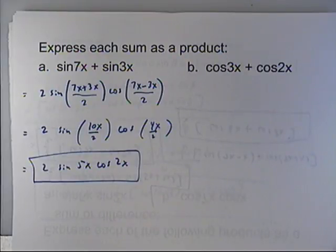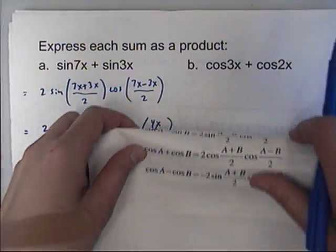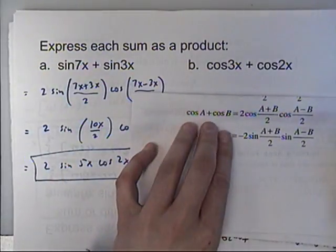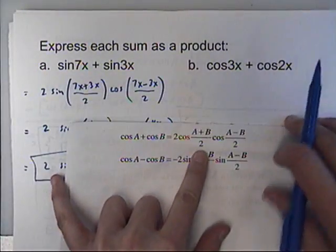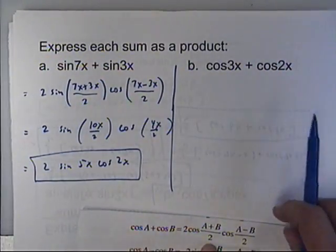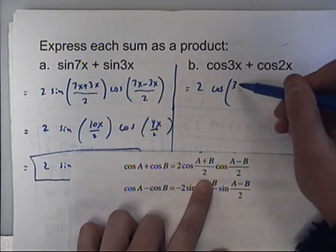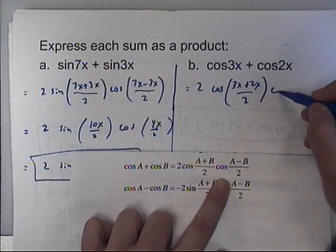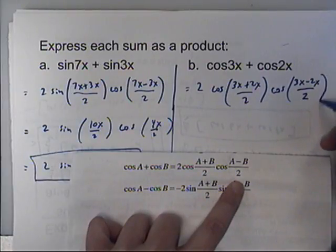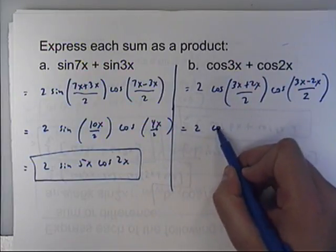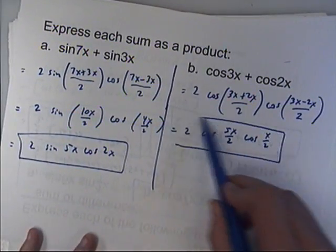The last one: cosine of something plus cosine of something matches the format of the third sum-to-product formula at the bottom of the page. So cosine(3x) plus cosine(2x) equals two times cosine of (A plus B)/2 — which is (3x plus 2x)/2 — times the cosine of (A minus B)/2 — which is (3x minus 2x)/2. That gives two times cosine(5x/2) times cosine(x/2). None of this can be simplified any further because it can't divide evenly.